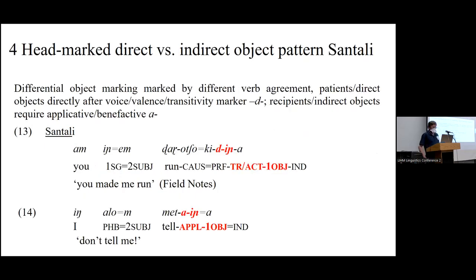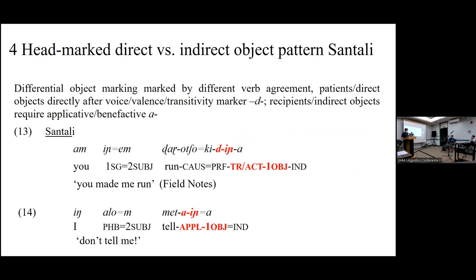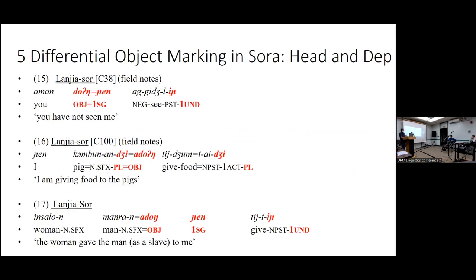Moving to differential object marking: Santali distinguishes direct and indirect objects, and distinguishes them by the use or lack of an applicative marker. The object markers are still the same in both cases — 'you made me run' or 'don't tell me' — but one still has this applicative marker. So they distinguish morphologically in the head-marking system between direct and indirect objects, which is actually fairly uncommon in the Munda languages. What we typically find is rather a primary object pattern, where transitive patients and ditransitive recipients pattern together.